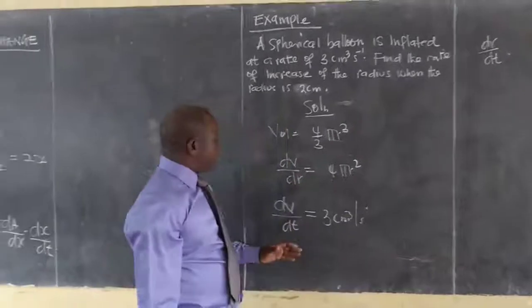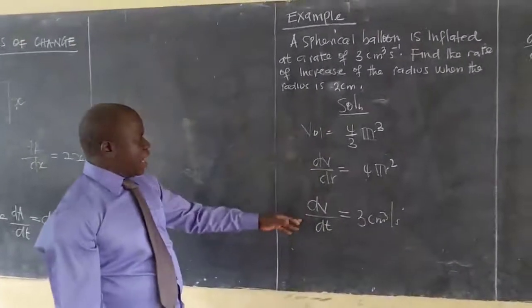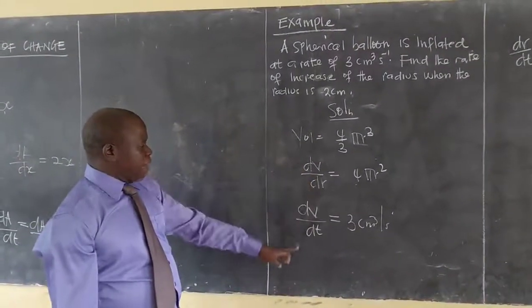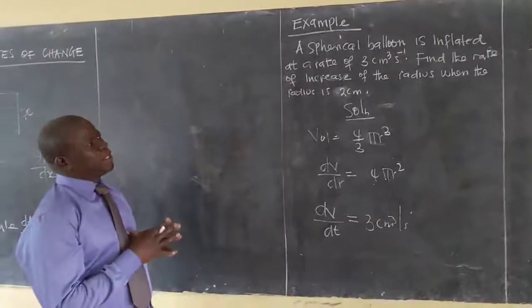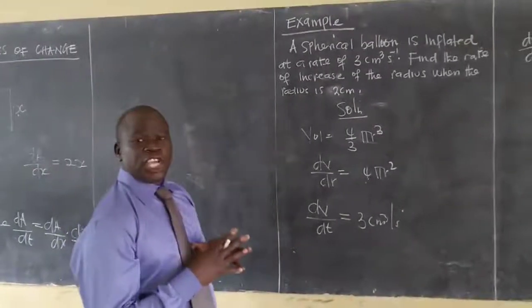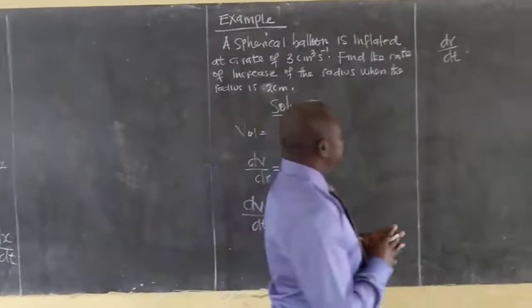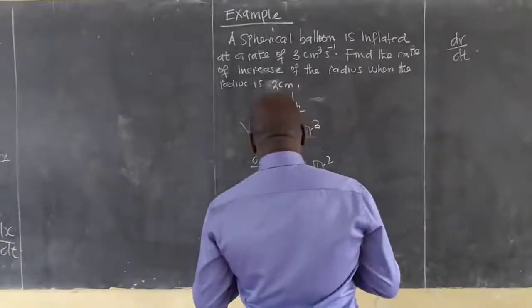Now, I am having what it is here. I have dV/dr, I have dV/dt, and also dr/dt. Now, how do I relate what it is now? Still, we use our chain rule. Okay? Use our chain rule.